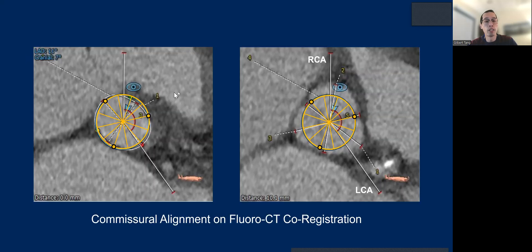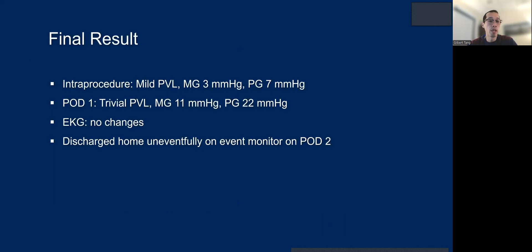With CT fluoroscopy co-registration using Siemens, the commissures are away from the coronaries and line up very nicely with the native commissures, so coronary access should not be a problem. There was mild PVL initially, but trivial the next day, with very acceptable gradients, no EKG changes despite right bundle branch block, and the patient went home on post-procedure day two on a monitor.